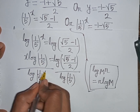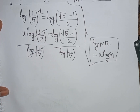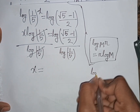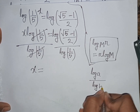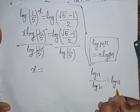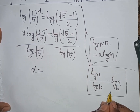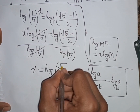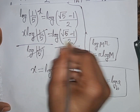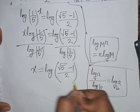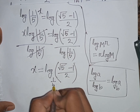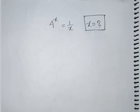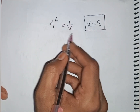We need the value of x, so we divide both sides by log(1/5). This cancels log(1/5) on the left, giving x equals log[(square root of 5 minus 1)/2] divided by log(1/5). Using the change-of-base formula log(a)/log(b) = log base b of a, x equals log base (1/5) of [(square root of 5 minus 1)/2]. This is our final answer.